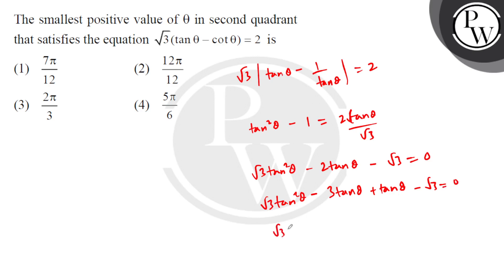Now here we take root 3 tan theta common, so we have tan theta minus root 3, and plus 1 common, so we have tan theta minus root 3 equals 0.